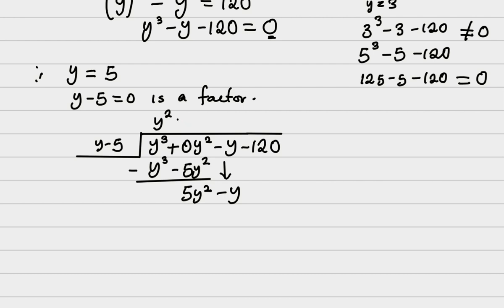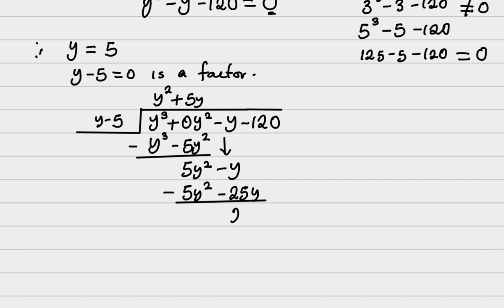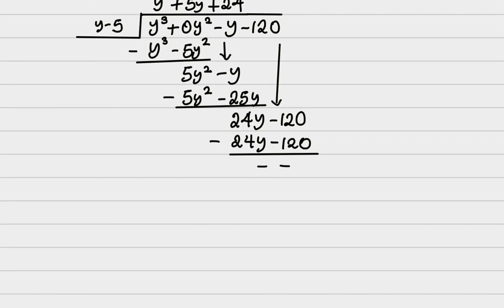I'm going to have plus 5y here now, so that when I multiply by y it gives me 5 y squared. Then I'm going to have minus 25y. Of course, I'm going to subtract just as I did earlier on, and this is going to be 24y. Then I'm going to bring down my minus 120, and of course this is going to be plus 24, so that I will have 24y minus 120. Once I subtract, I have y minus 5 as one of the factors. Then I have y squared plus 5y plus 24.